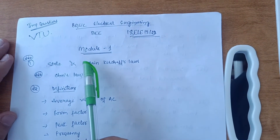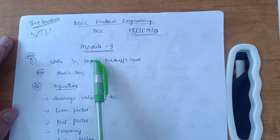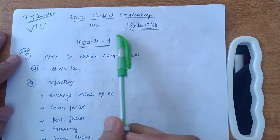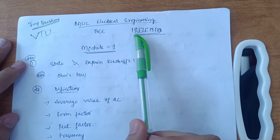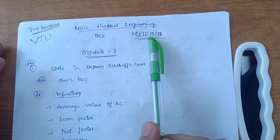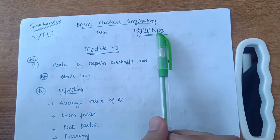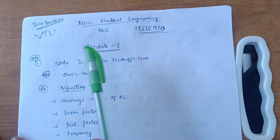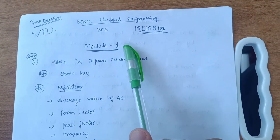Welcome back, my dear friends. In this video, I want to figure out the important questions of Basic Electrical Engineering, that is BEE. The subject code is 18ELE13/23 — it is the third subject in the first semester and also in the second semester. It depends upon your college, so without wasting any time, let me discuss some important questions from each module.